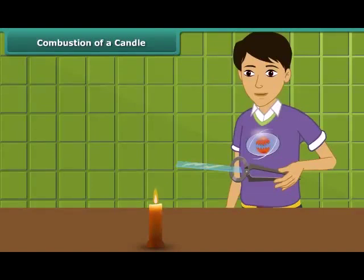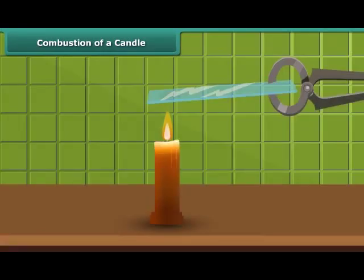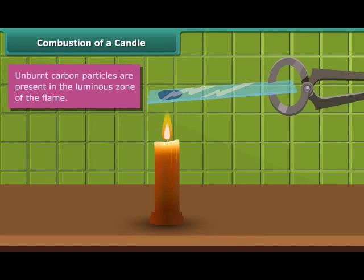Let us watch Rohan performing an activity. He is introducing a glass plate into the luminous zone of the candle flame with the help of a pair of tongs. The glass forms circular blackish spots indicating the presence of unburnt carbon particles present in the luminous zone of the flame.